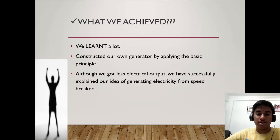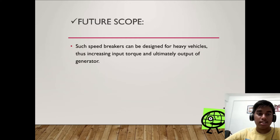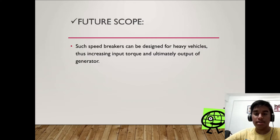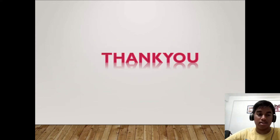What we achieved: we learned a lot and constructed our own generator by applying the basic principle. Although we got less electrical output, we have successfully explained our ideas of generating electricity from a speed breaker. Future scope: such speed breakers can be designed for heavy vehicles, thus increasing input torque and ultimately the output of the generator, with more suitable and compact mechanisms to enhance efficiency.